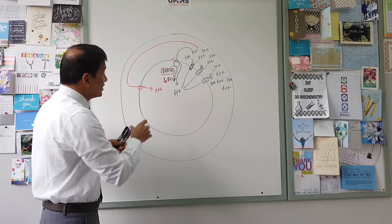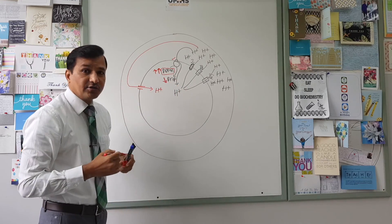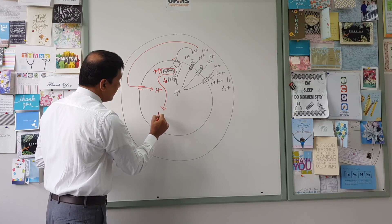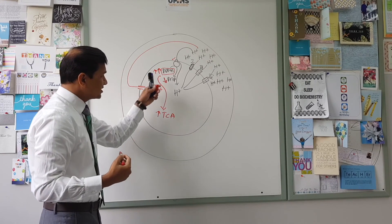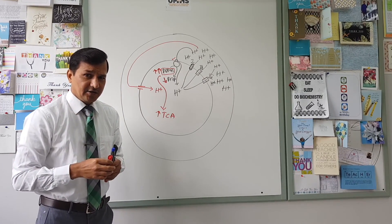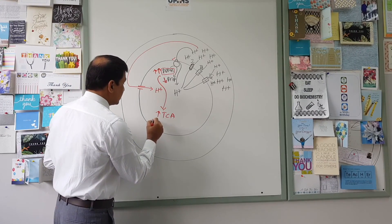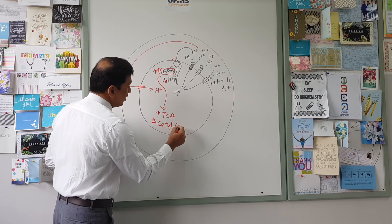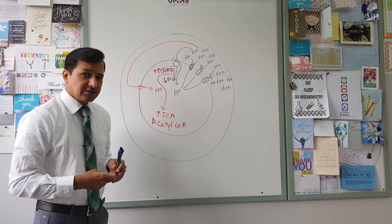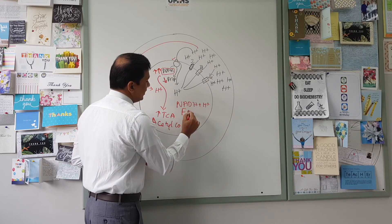When ATP synthesis decreases, ADP levels increase because ADP is not being converted to ATP. These ADPs go on to increase TCA cycle activity — specifically, they increase an enzyme in the TCA cycle called isocitrate dehydrogenase. When the TCA cycle is increased, acetyl-CoA is broken down and oxidized to provide NADH+H⁺ and FADH₂.